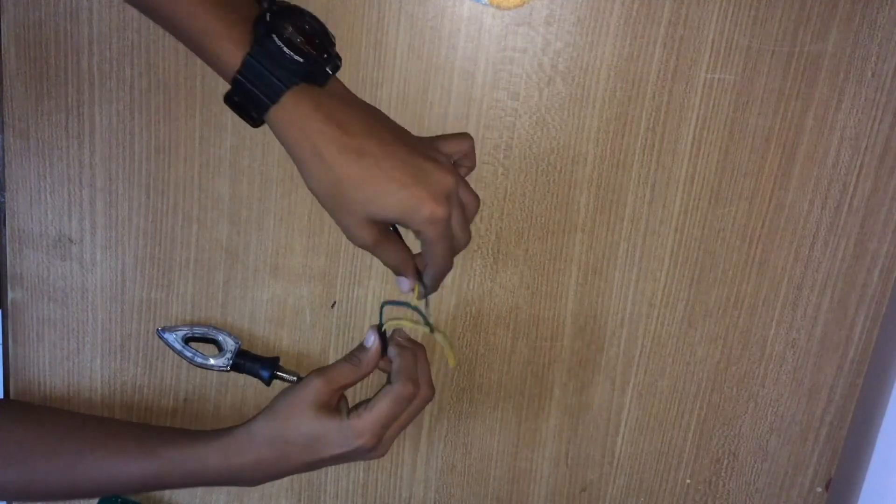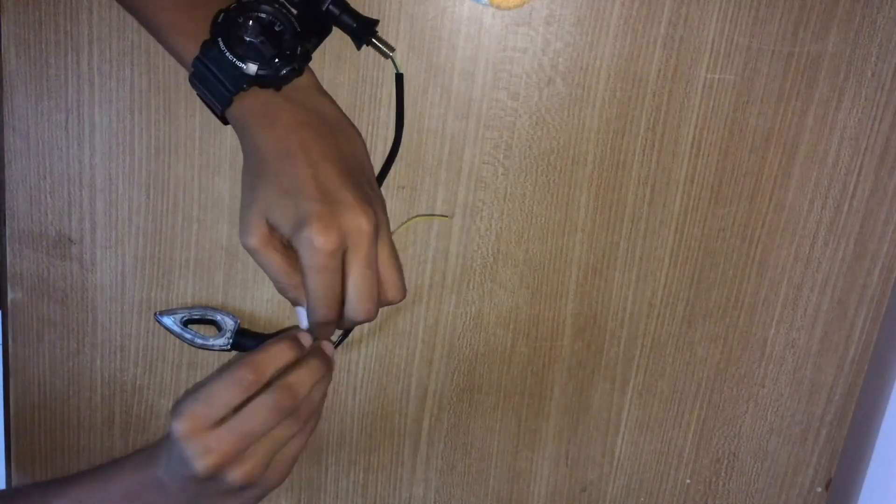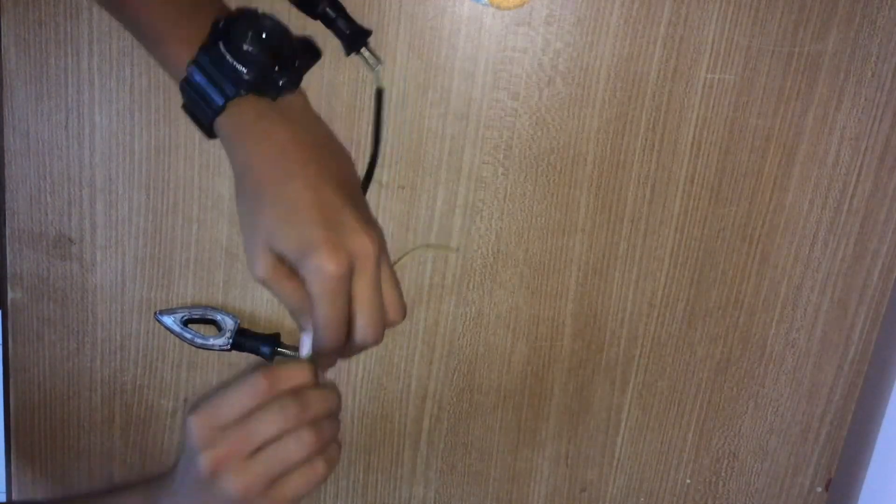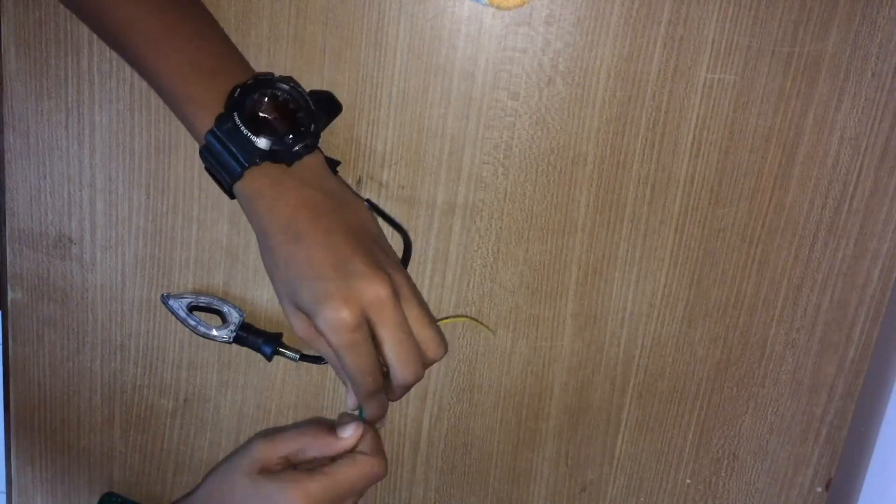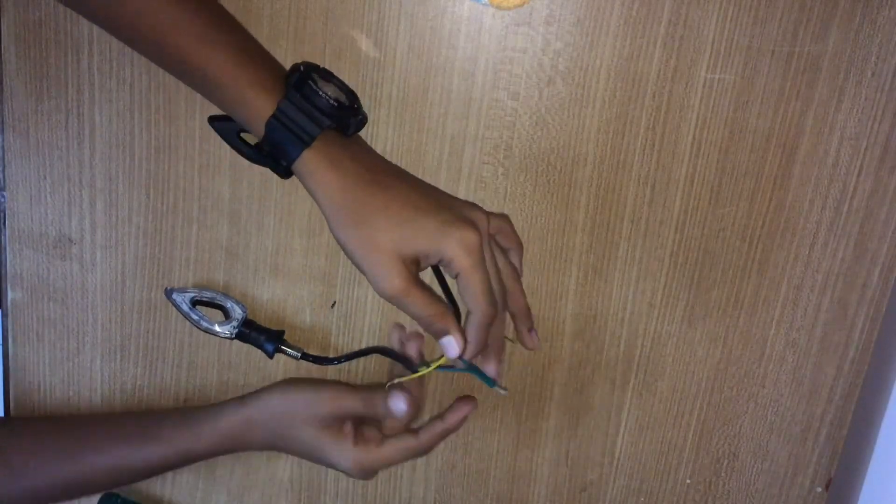Join all the negative wires together. If you are using 4 indicators for the front and the back part of the cycle, join the positive wires of the left indicator together and the positive wires of the right indicator together.